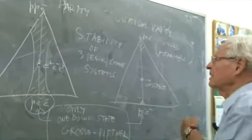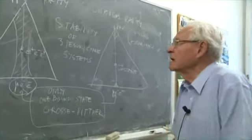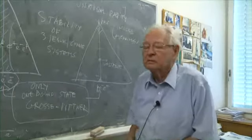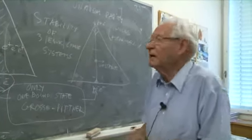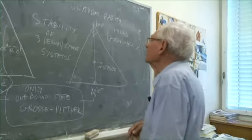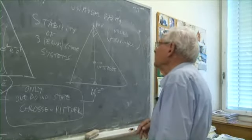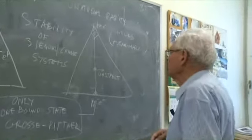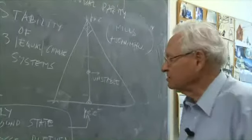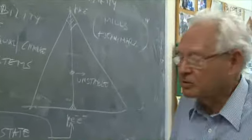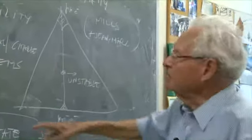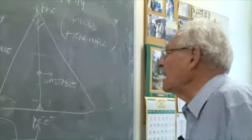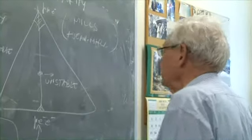Now, of course, we know that there exist states with natural parity, parity being equal to minus one to the L, and there are also states with unnatural parity which were predicted, for instance, by Alexander Dracht years ago. You can redraw the same diagram for unnatural parity.